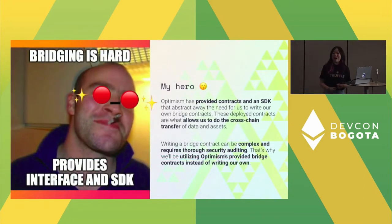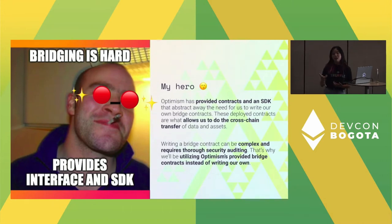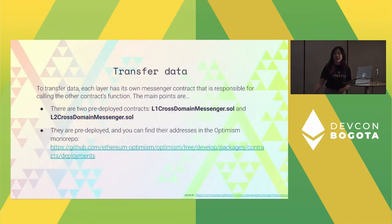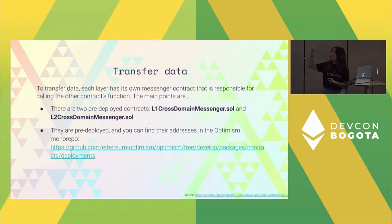Bridging is hard. We're actually going to go over Optimism's bridge contracts. They have already written a few contracts as well as provided an SDK for us to do this for a simple use case. Bridge contracts probably require a lot of security auditing — Optimism has provided that ability for us to incorporate bridging through battle-tested contracts, as well as an SDK if you don't want to do any Solidity at all.